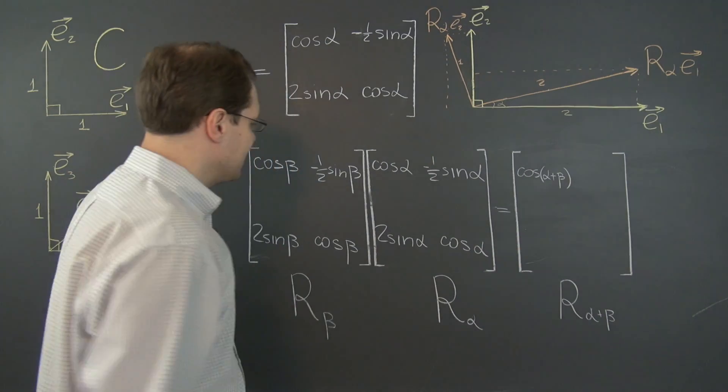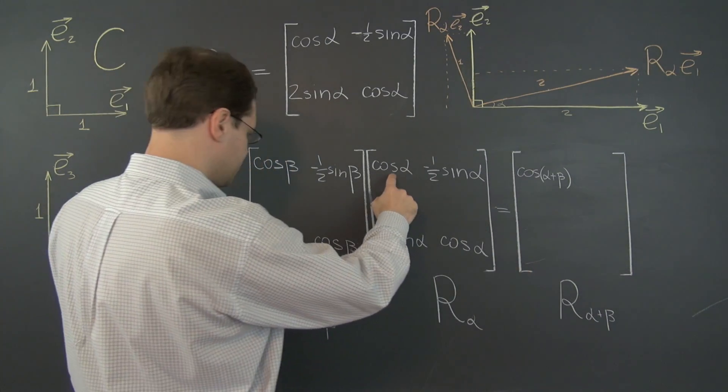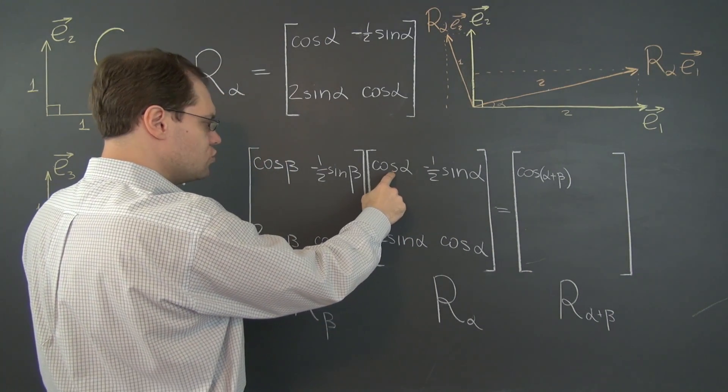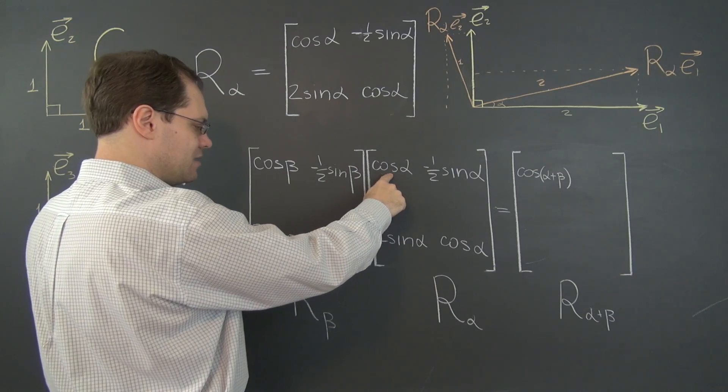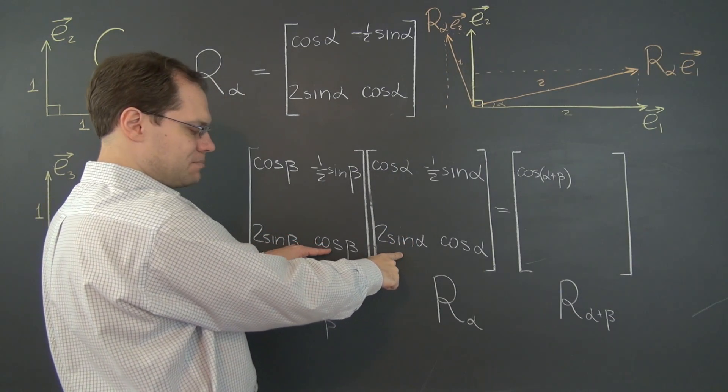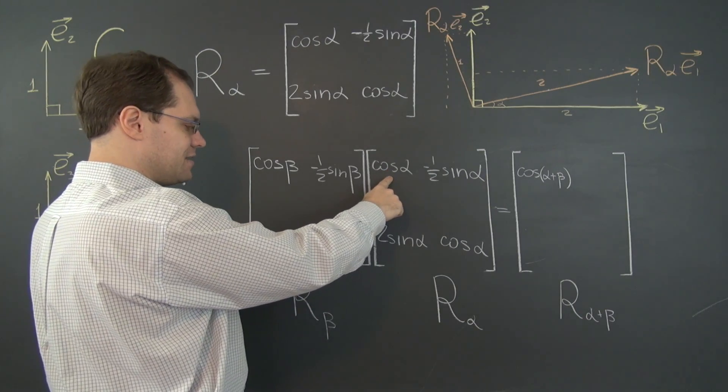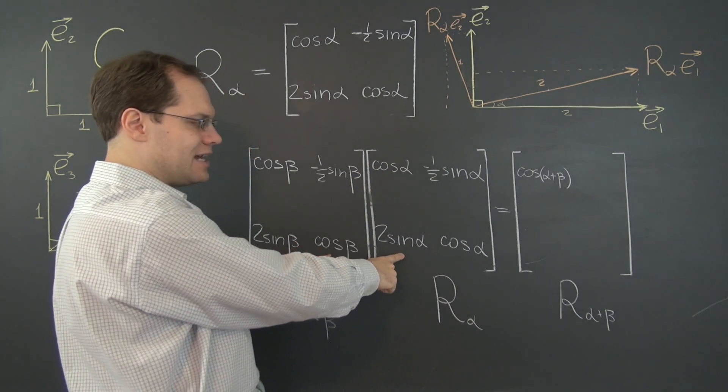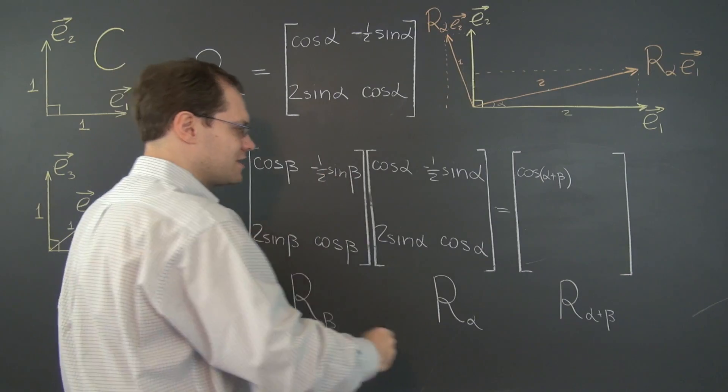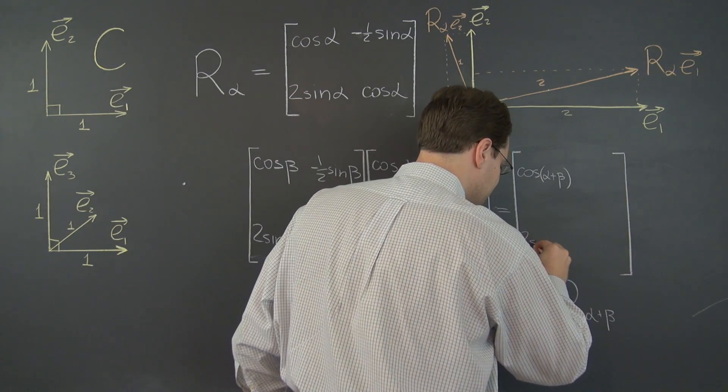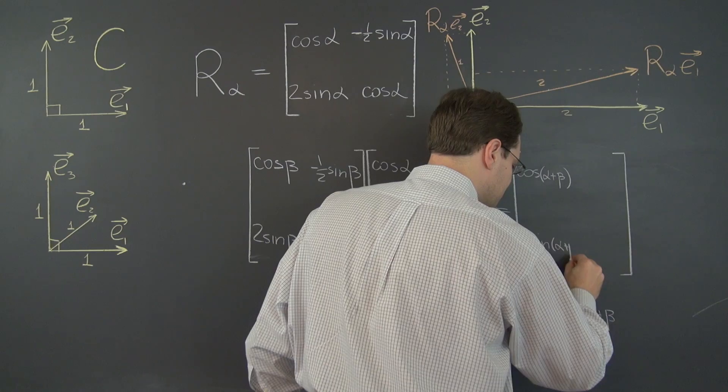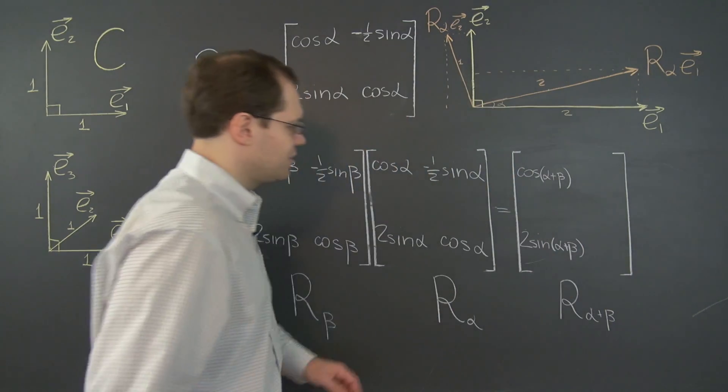Now let's see what happens down here. We have 2 cosine alpha sine beta plus 2 cosine beta sine alpha. Or in alphabetical order, 2 cosine alpha sine beta plus 2 sine alpha cosine beta. Perfectly 2 times sine of alpha plus beta. Alright.